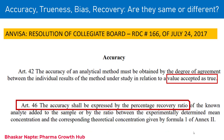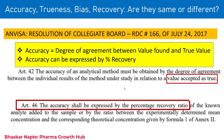According to the ANVISA guideline, the accuracy of an analytical method is obtained by the degree of agreement between the individual results of the method under study in relation to a value accepted as true. The second important point given by the ANVISA guideline is that accuracy shall be expressed as percentage recovery. So accuracy is the degree of agreement between the value found and the true value — consistent with the ICH definition — and is further expressed as percent recovery.